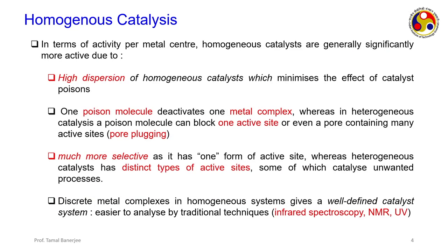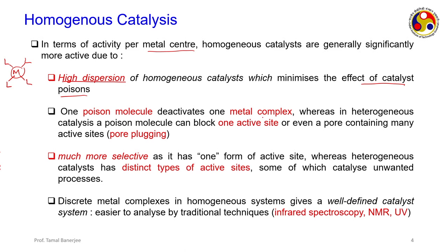In terms of activity per metal center, homogeneous catalysts are generally significantly more active because every metal atom is exposed to the reaction mixture. There is also high dispersion of homogeneous catalysts, which minimizes the effect of catalyst poisons. When dispersed in a medium, if one center is poisoned, only that center is deactivated; others are not affected. One poison molecule deactivates only one metal complex.